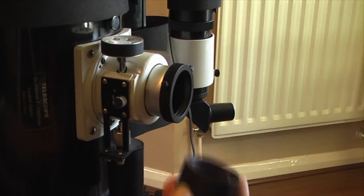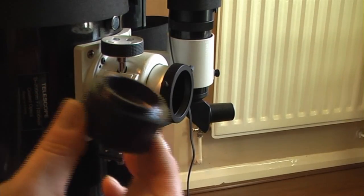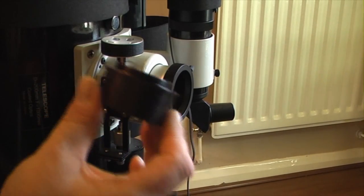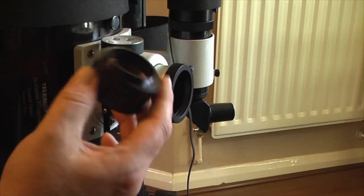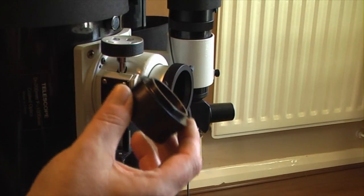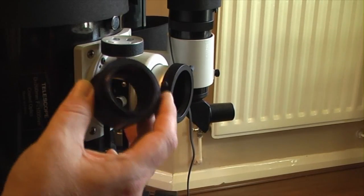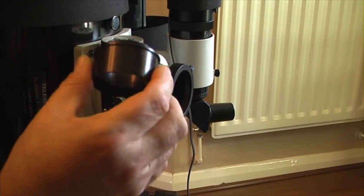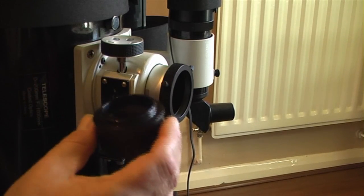These also have a thread on the inside for 2-inch filters. Now these actual fittings, although mine is an Orion one, there are actually a couple of different makes of these. The most common one is Antares. It's exactly the same piece of kit, it's just re-badged. Now I find the most available place for getting hold of these is from Rother Valley Optics and I'll put the URL up on the screen.